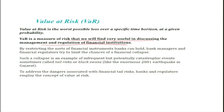By restricting the sources of financial instruments that banks can hold, financial regulators try to limit the chances of financial collapse. Such a collapse is an example of an infrequent but potentially catastrophic event — sometimes called tail risk or black swans — such as an enormous earthquake, like the one that happened in Gujarat. Regulators, when reviewing investment strategies of public funds including pension funds, use Value at Risk to assess the worst-case loss, and investments with unacceptable worst-case outcomes would not be encouraged.